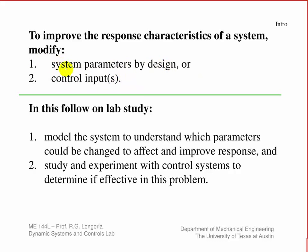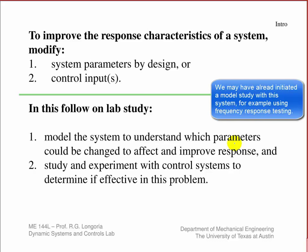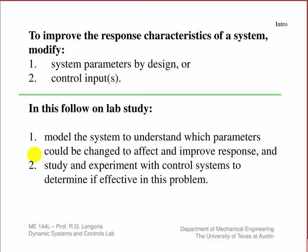So if you're able to go in and change the properties of the system, then that's one way, the other way is to actually implement some active control. So in this follow on lab, what we want to do is spend some time modeling the system, understand on a system like this, and it is a lab system, but it's a model of a typical engineering problem that you might encounter. By modeling it, understanding which parameters could be changed to affect and improve the response. So by modeling, you can determine whether those are things that can be changed. If you can't, then you have to do controls. We'll also study ways to implement control and then we'll experiment with control systems to give you an idea of how you go about doing that.